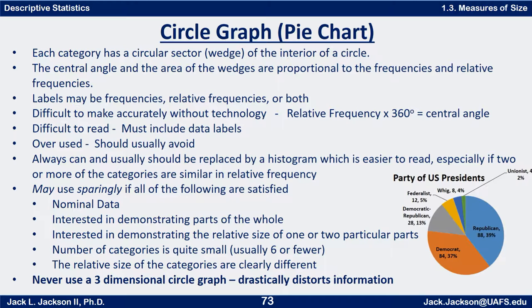These graphs are actually pretty difficult to accurately make without technology. First you need to find the central angle, which is pretty easy — just multiply the relative frequency times 360 degrees. But you also need a compass to make a circle and a protractor to measure the angles correctly. They are difficult to read, so they must include data labels to make sense. They can always be replaced by a histogram, which is easier to read, especially when two or more categories are close to the same size — it's harder to see the difference between two wedges than between two bars.